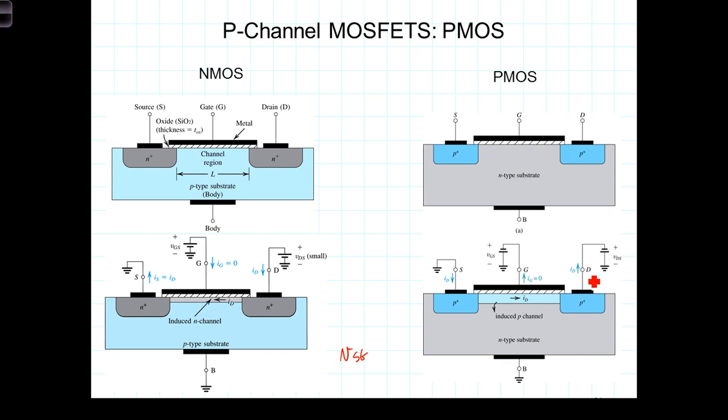The source must be at a higher voltage than the drain, and must be at a higher voltage than the gate for current to flow, and VSG and VSD will thus be positive voltages.